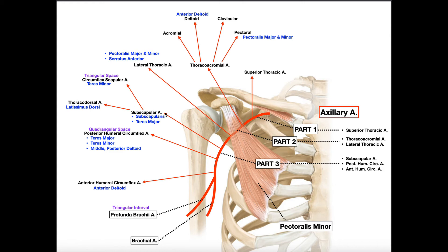So that's the first branch of part three, the subscapular artery, which has two further branches: the circumflex scapular and thoracodorsal arteries. The second vessel off the third part of the axillary artery is the posterior humeral circumflex artery. As the name suggests, it circumflexes — goes around the circumference of the humerus — but it does so posteriorly.